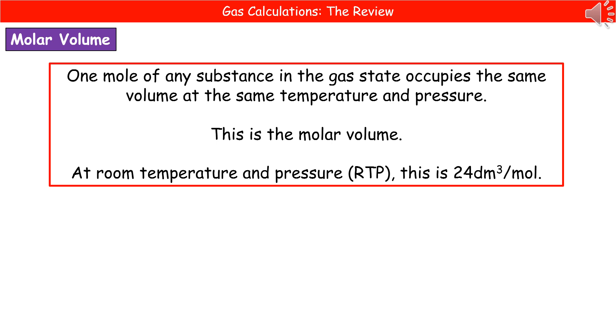So what we find is that any substance at room temperature and pressure when in its gas state will have a volume of 24 decimeters cubed per mole.